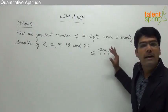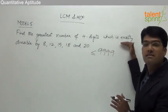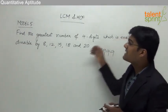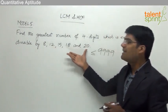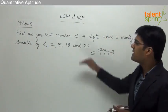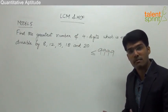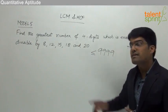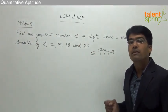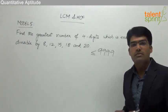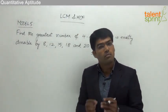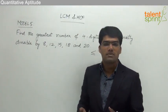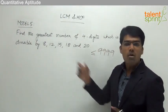Before finding the greatest four-digit number, let us first concentrate on finding a number which is exactly divisible by 8, 12, 15, 18, and 20. To get a number exactly divisible by all the given values, we take their LCM. LCM gives the smallest number which is divisible by all the given numbers — it is the least common multiple.